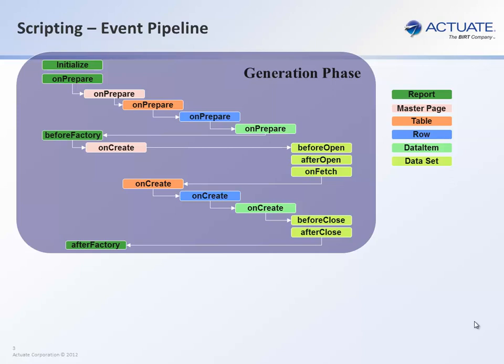Then the before factory gets called, which will, in turn, call the unprepared of the master page. Only after the unprepared of the master page does the data set kick in. So the generation phase will then call the before open, the after open, and then the unprepared of the data set. Once the data is fetched, the unprepared of the table will get called, which will call the unprepared of the row, which will call the unprepared of every data item within that row. Once all the rows have been created, the before close and the after close of the data set will be called, and lastly, the after factory will get called.